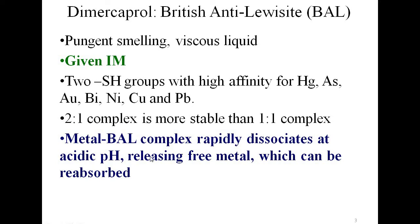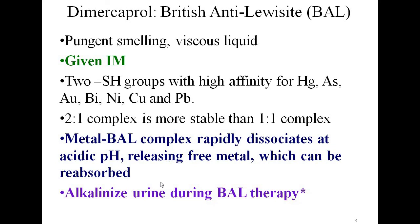A very important point: the metal-BAL complex is excreted in urine. If the urinary pH is acidic, it will dissociate, releasing the free metal, which can be reabsorbed into systemic circulation. This is prevented by making the urine alkaline — an extremely important point and a commonly asked short answer question: why is urine alkalinized during British Anti-Lewisite therapy?